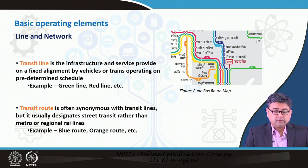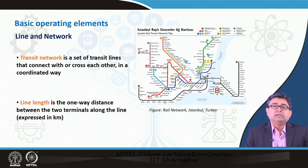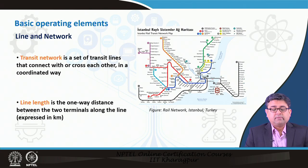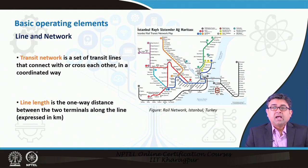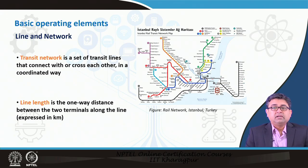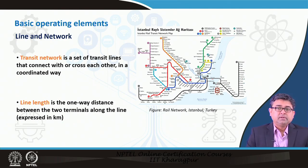The next terminology to remember is a transit network. There may be different lines and different routes in a public transportation system. A transit network is a set of transit lines that connect with or cross each other in a coordinated way. Here you would see a map of the rail transit network in Istanbul, Turkey, where several transit lines run parallel to each other or crisscross — and the crisscross is by design, so that people can move efficiently from one point to another in the city.